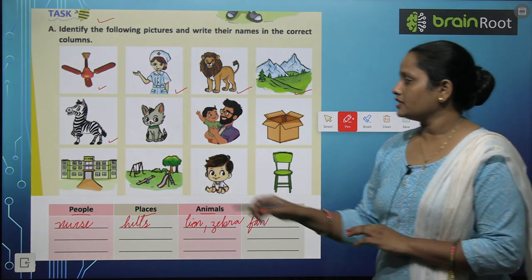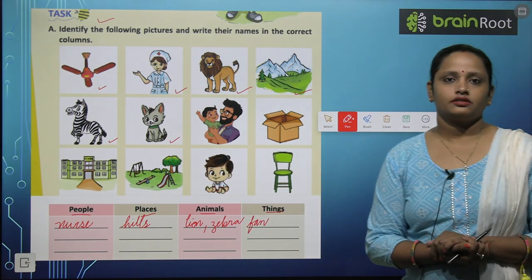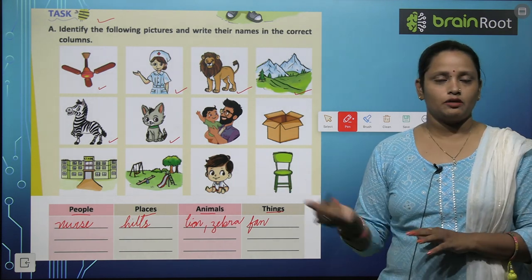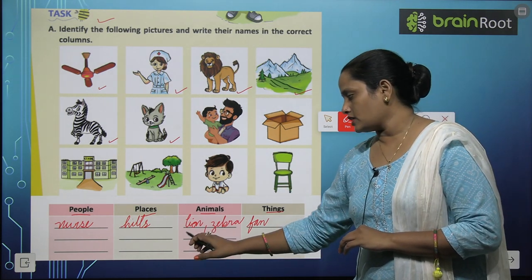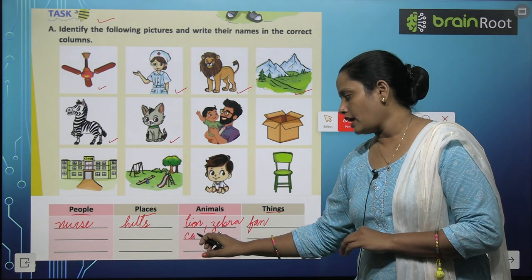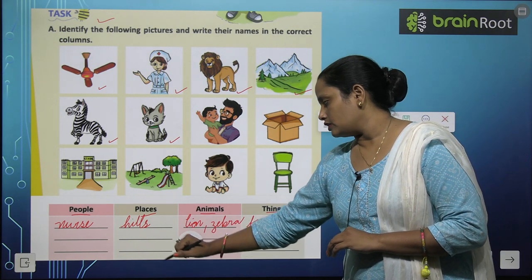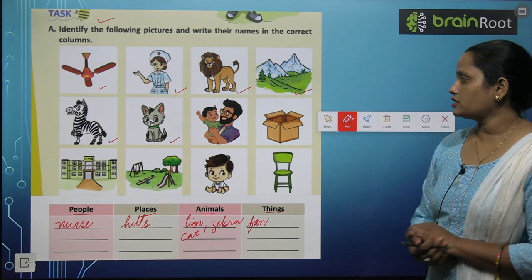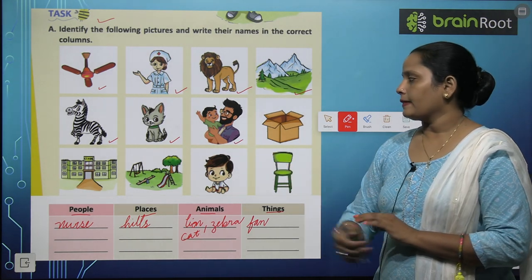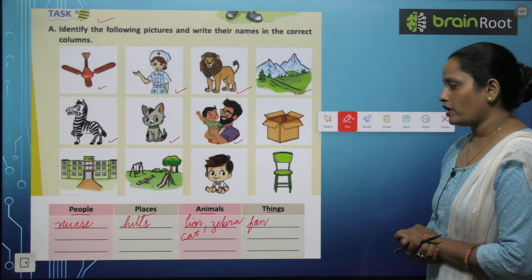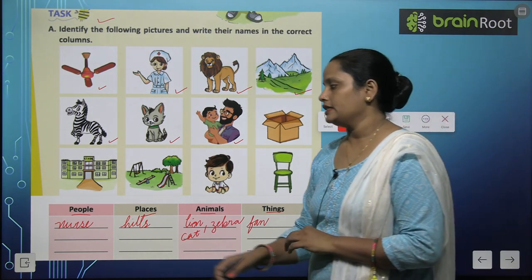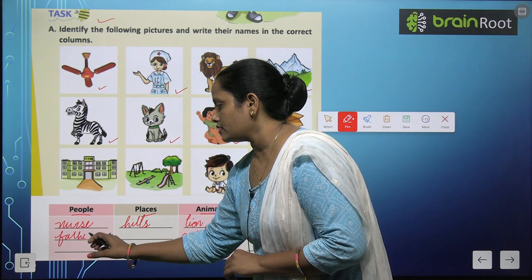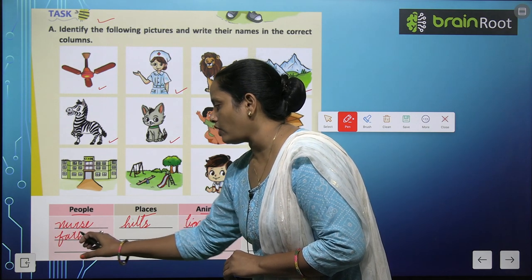Next is cat. Toh dekho cat kya hai? Koi person, place, animal hai? Cat is an animal. Next, father. Father kaun hai? Ek person hai. So let's write it here — father.